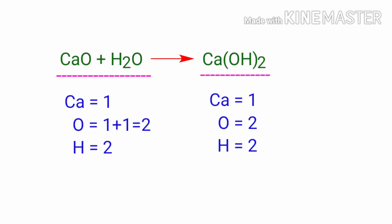If you look at this equation, the number of atoms at the reactants side are equal to the number of atoms at the products side. So we don't need to balance the equation because the equation is already balanced.